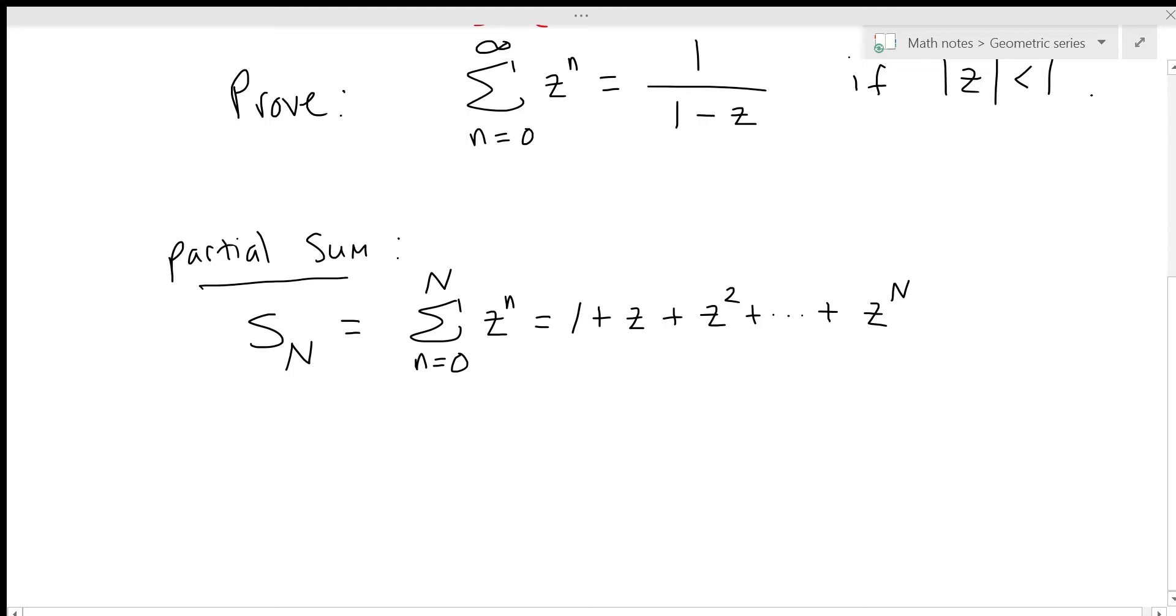And the trick that we'll use to evaluate this is to now multiply by another factor of z. So if we do this, it's easy to see what happens. So we now have the sum of z to the lowercase n plus 1. And we can write this sum out in detail. And we have z plus z squared plus dot dot dot plus z to the capital N plus z to the capital N plus 1.